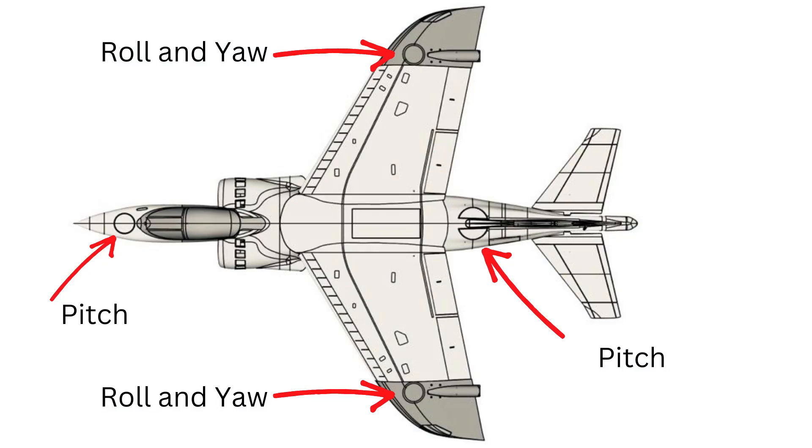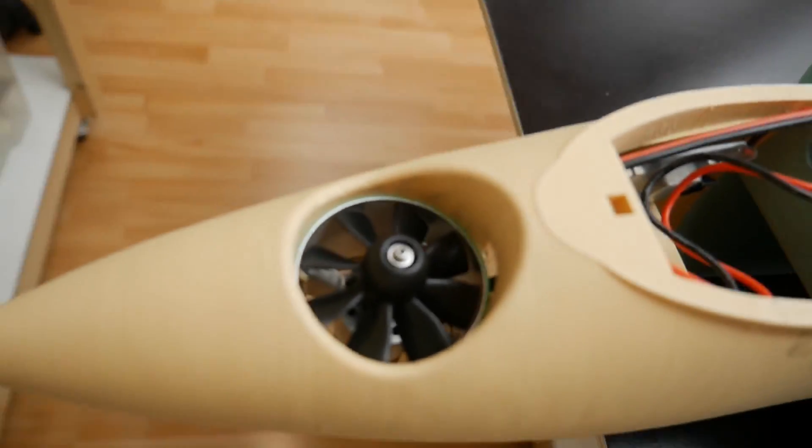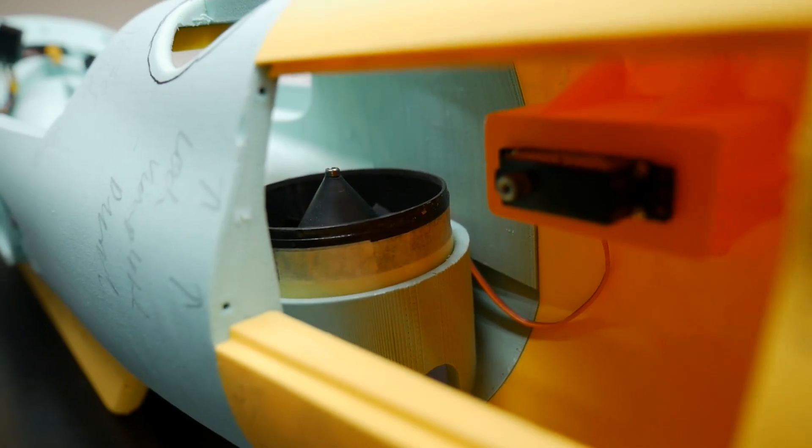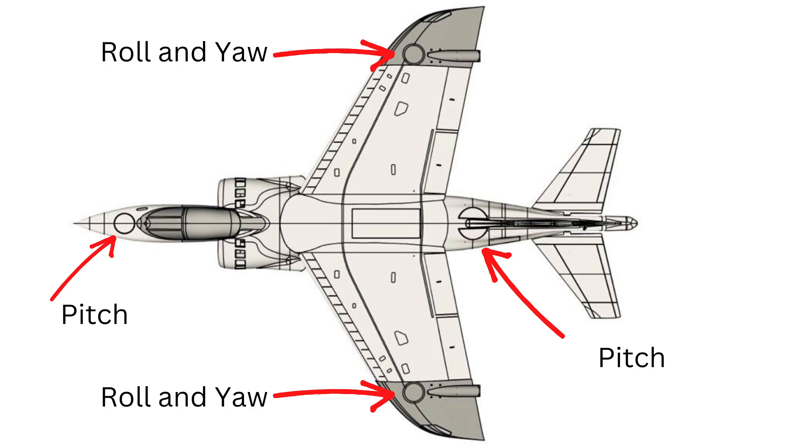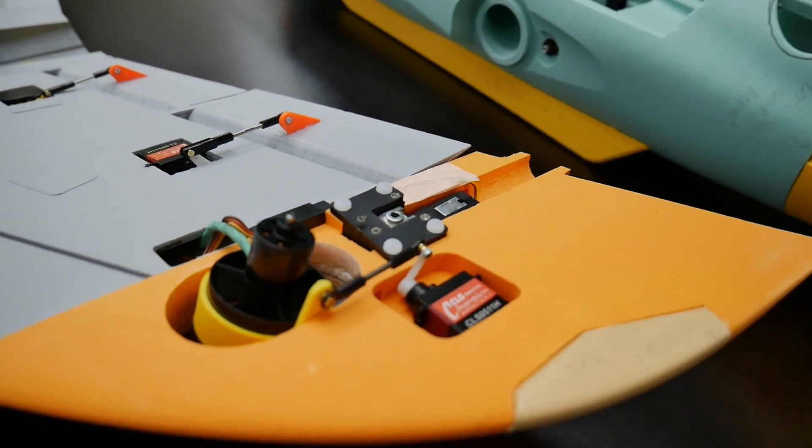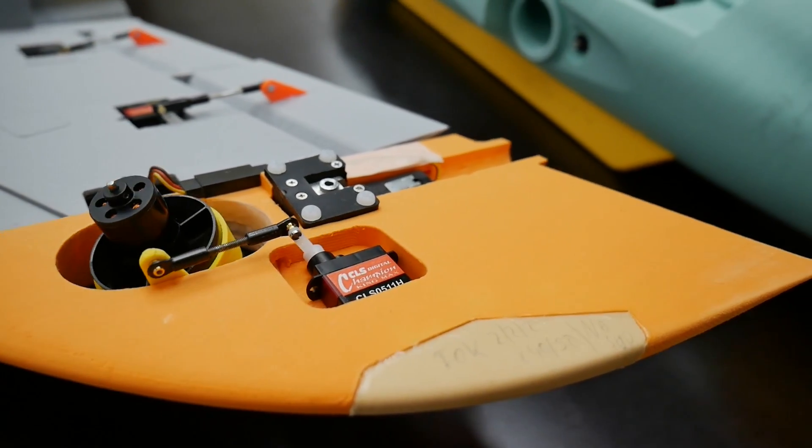The nose and rear EDF are stabilizing the Harrier on the pitch axis and the wing EDFs are stabilizing for roll and the yaw axis. For this reason they are swiveable and controlled by a servo.